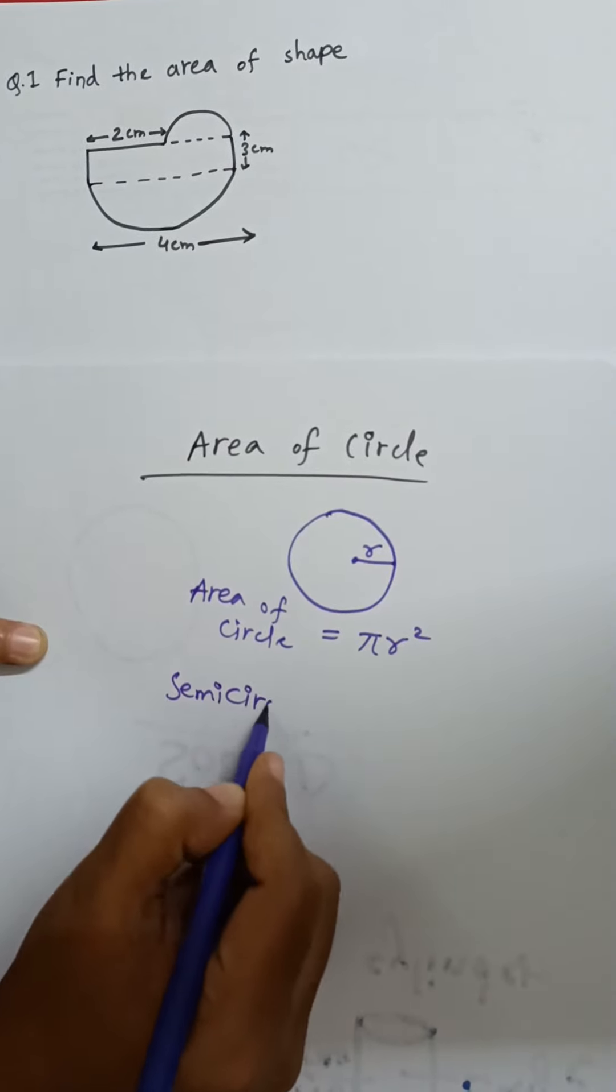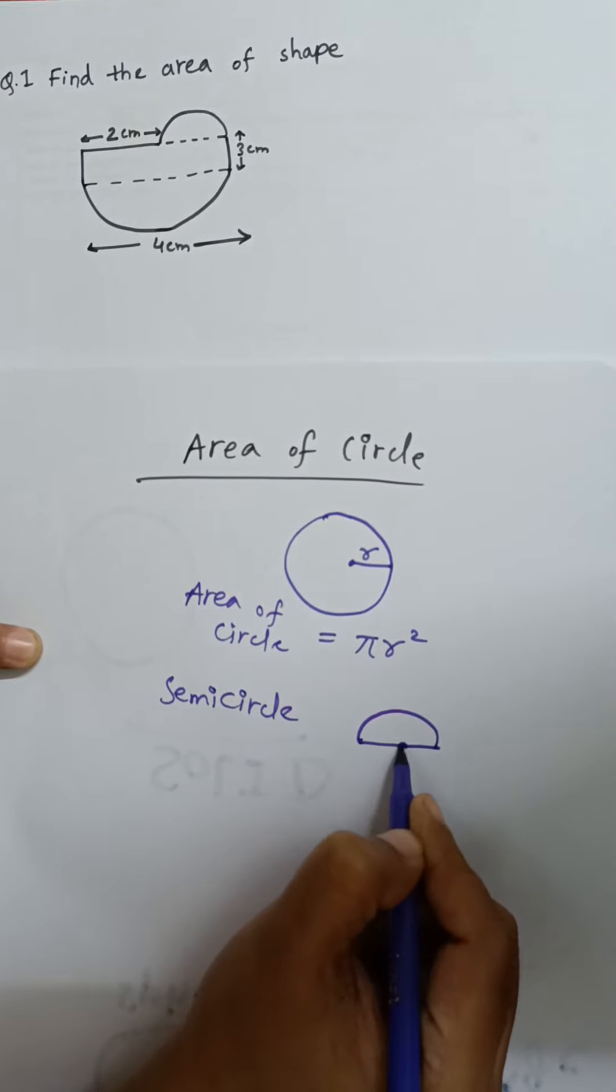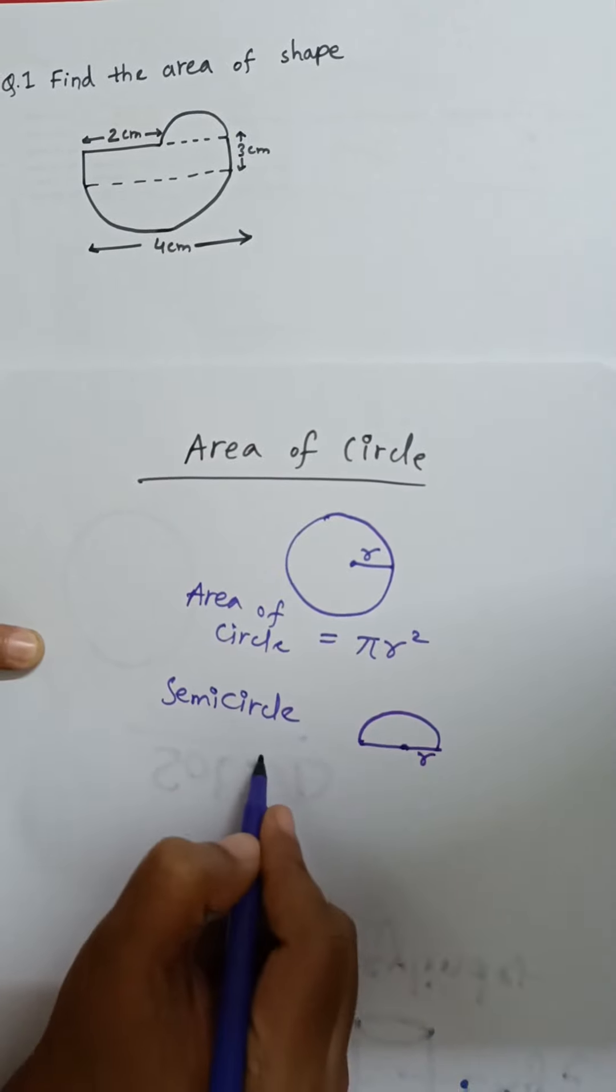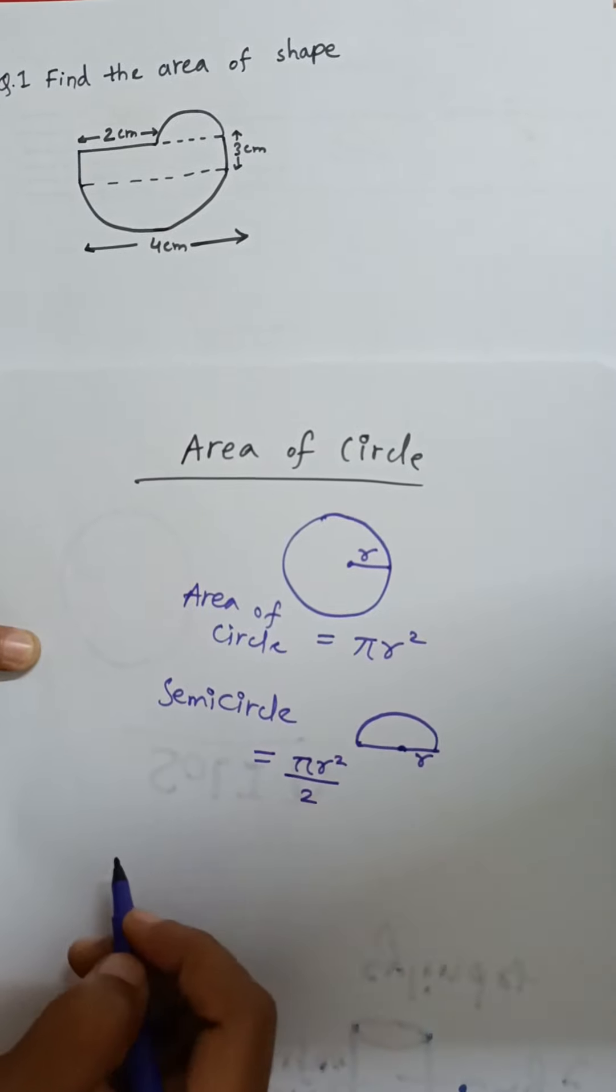If you want to know about the semicircle, semicircle is nothing but half of a circle. If you want its area, just take half of the area of a circle, that is pi r square by 2.